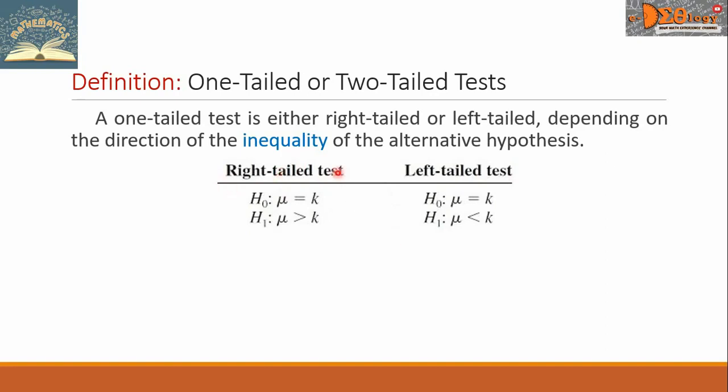For the right-tailed test, we have the Null Hypothesis, H sub 0, and this is Mu equals K. This Mu is the population mean, and K is any value. And H sub 1 will give the idea that Mu is greater than K.